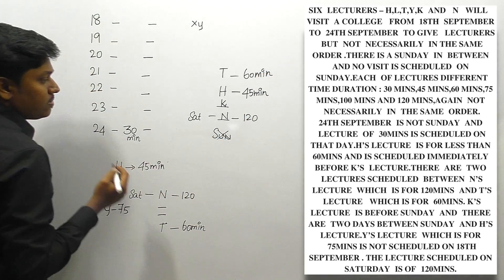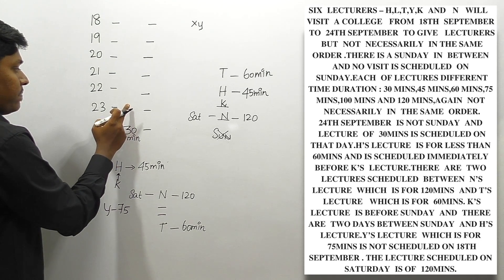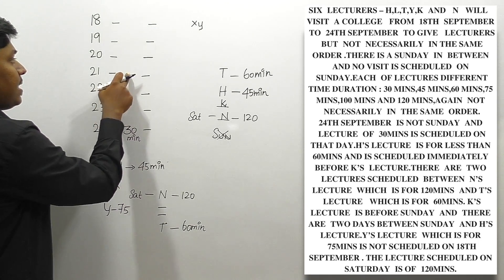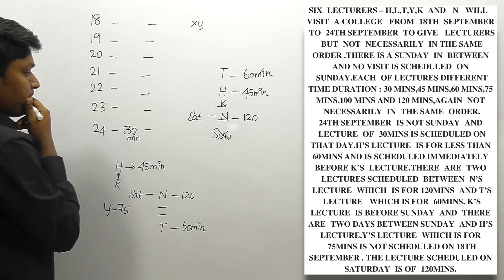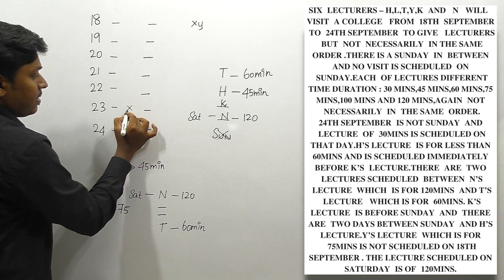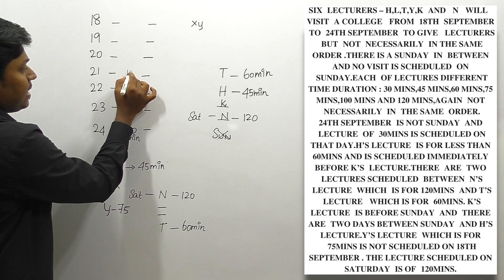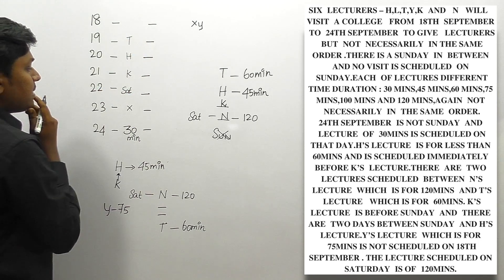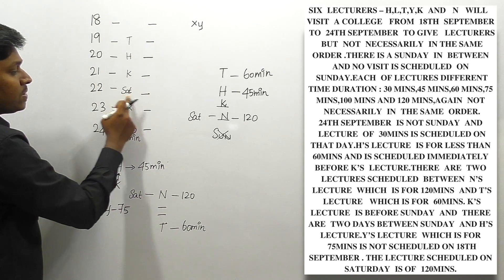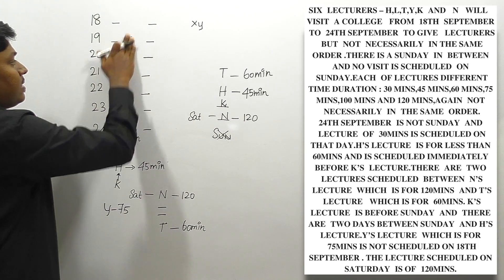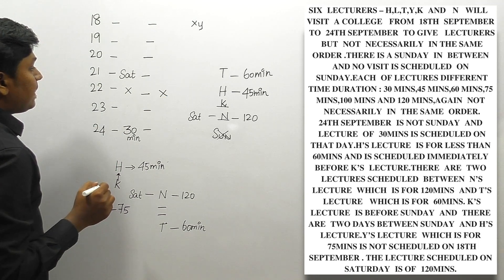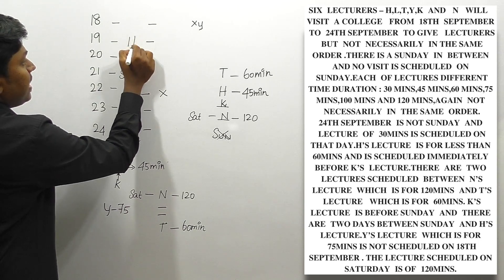There will be no lecture on Sunday. Let's fix the arrangement: if Sunday is placed on a certain date, Saturday must be the day before. We try placing Saturday at different positions. With 24th not being Sunday, if Saturday is fixed at a particular date, the next day is Sunday. K and H are placed before Sunday, and T follows the two-lecture gap from N.